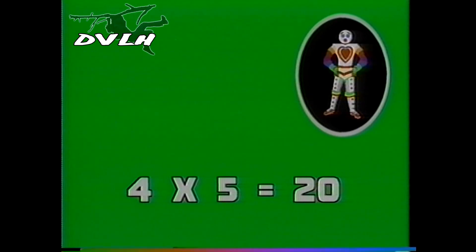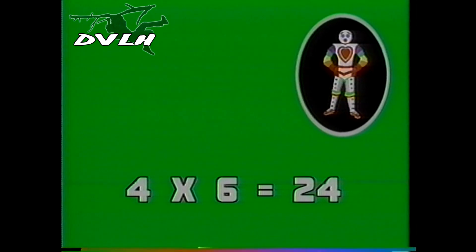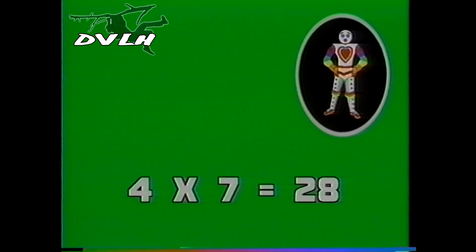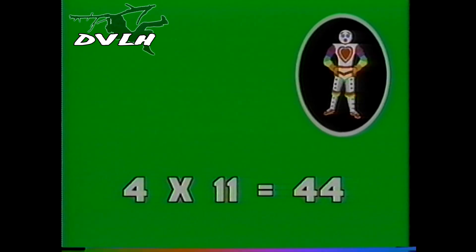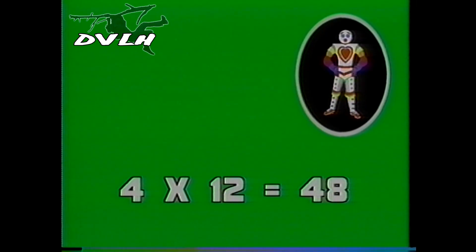Four times one is four. Four times two is eight. Four times three is twelve. And four times four, sixteen. Four times five is twenty. And four times six, twenty-four. Four times seven is twenty-eight. And four times eight is thirty-two. Four times nine is thirty-six. Four times ten is forty. Four times eleven is forty-four. And four times twelve is forty-eight.